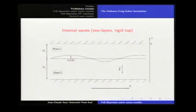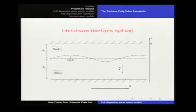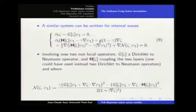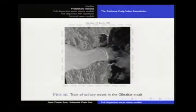You have the same problem for internal waves, which are interesting because waves occur at the interface of two layers of fluid of different density. The system is much richer because there are many more parameters and regimes. The system involves two non-local operators, one for each layer, which somehow couple the two layers. This is non-local by definition from the beginning. Here is an example of a trace of internal waves showing that they occur and are stable — so we have to prove some stability results.